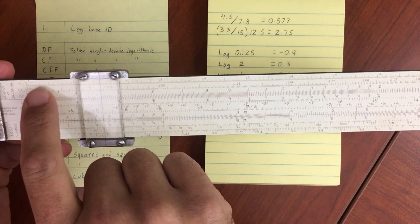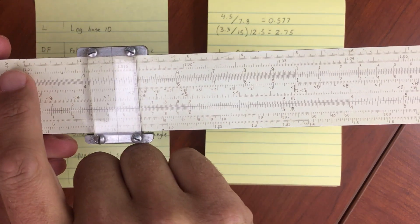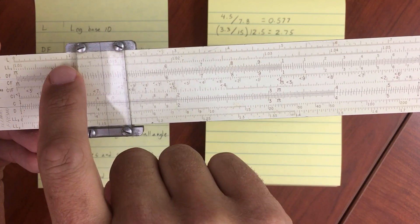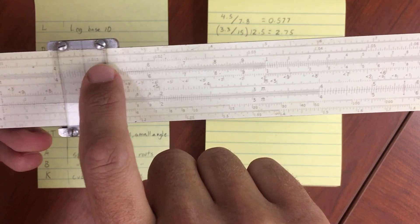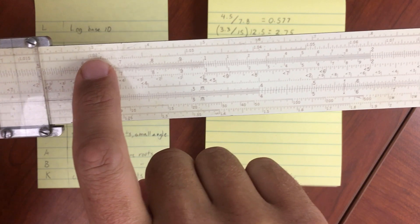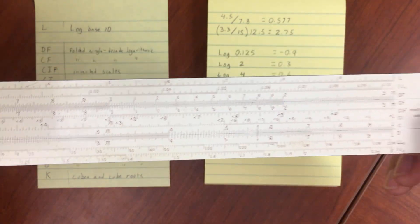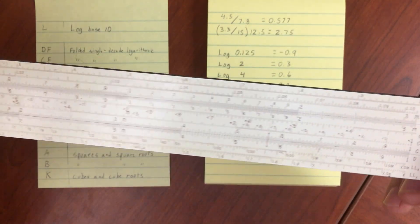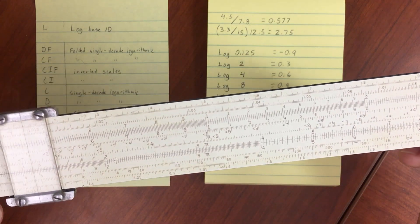You'll notice the L scale has been linearized. So the spacing between zero and point one is the same as between point one and point two, point three, point four, point five. So this is now a linear scale, and that's what happens with logarithms.